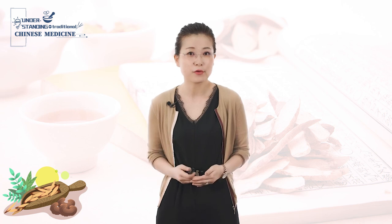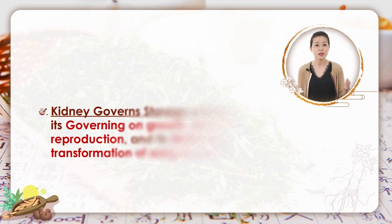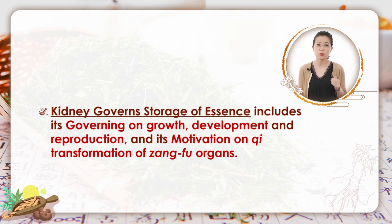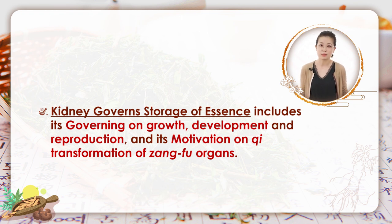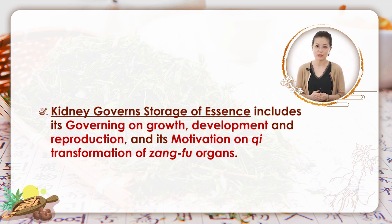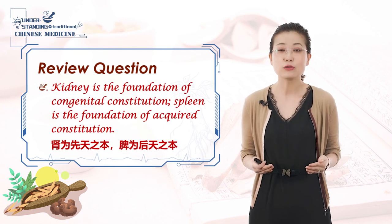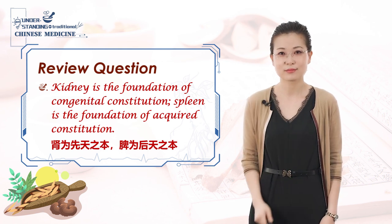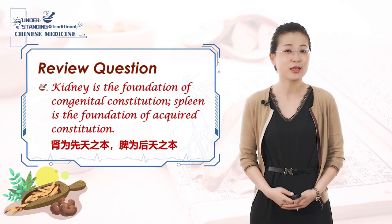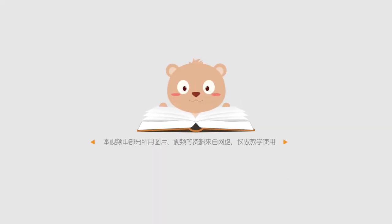Today's contents are not easy to understand, so I hope you take some time to review them. We have learned one physiological function of kidney — governing storage of essence — specifically demonstrated by kidney's function in governing growth, development and reproduction, and motivating qi transformation of zangfu organs. Don't forget the question left at the beginning of class: how to understand the sentence about kidney and spleen as foundations of congenital and acquired constitution? That's all for today — thank you, and I will see you next time.